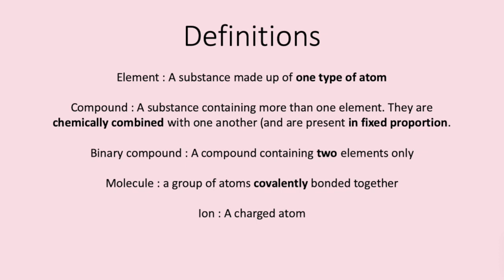Binary compounds contain two elements only. Molecules are a group of atoms covalently bonded together such as a molecule of oxygen, a water molecule or a carbon dioxide molecule. An ion is a charged atom. The atom must have lost or gained electrons such as Na+, Cl-.